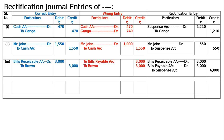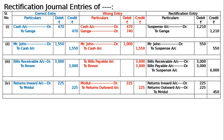This rectifies: bills receivable amount of 3000 posted to bills payable account is now corrected. Fourth error: goods returned by Mridul of 225 have been entered in the returns outward book. The correct entry is sales returns account debited to Mridul 225, but it was wrongly written as Mridul debited to returns outward account 225. Hence the rectification entry: returns inward account debited 225, and returns outward account debited 225 to cancel.